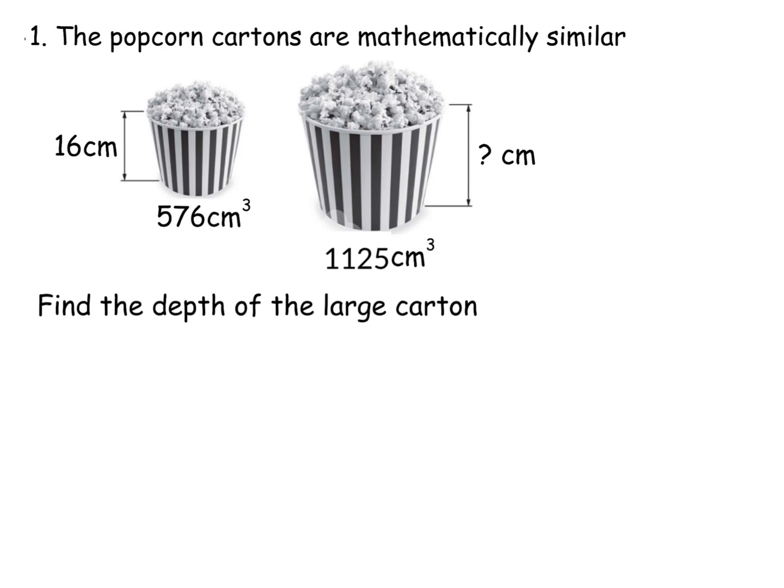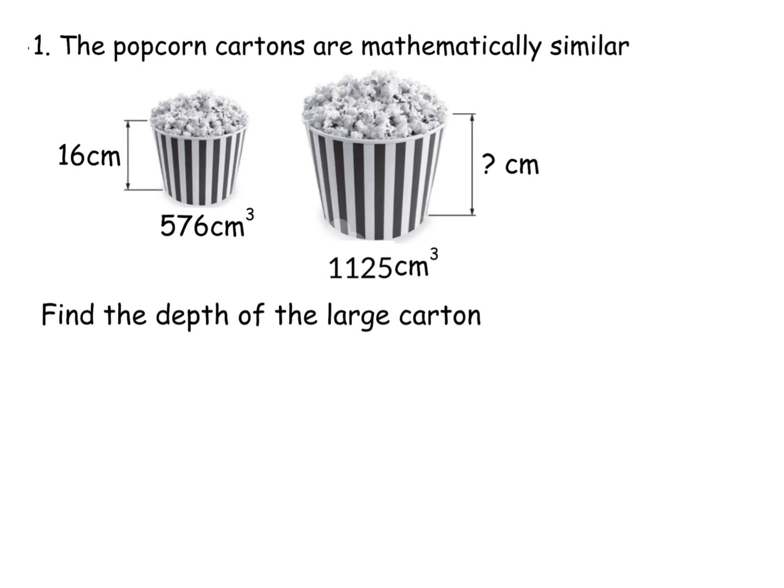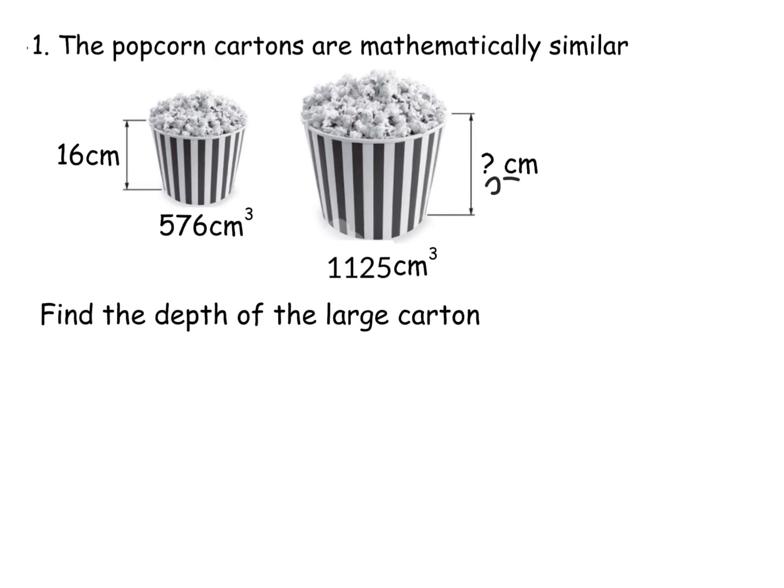So I think, well, what would I have done if I was to find the big volume? So I would have done my unknown. I would have done my scale factor first. So let's call this bit over here, let's call this x, the thing we're trying to find. So I would have said, well, my scale factor was x over 16.